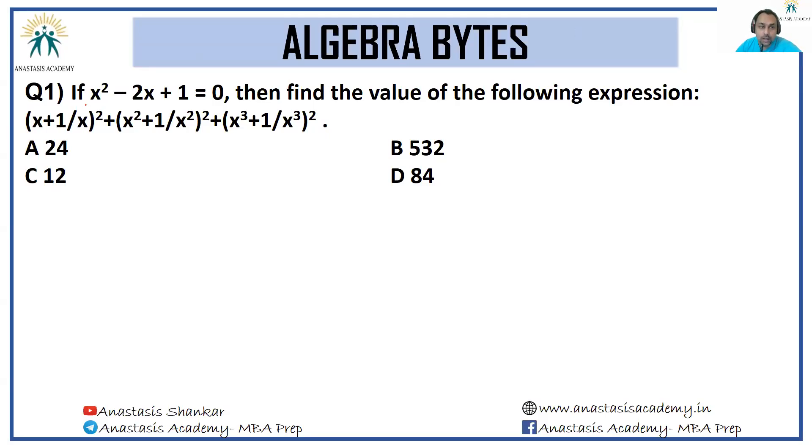Let's look at this question. If x² - 2x + 1 = 0, find the value of the following expression: (x + 1/x)² + (x² + 1/x²)² + (x³ + 1/x³)². I hope when you look at this question, this expression doesn't make you run away from it, because the game lies elsewhere. This is a very simple expression. This is nothing more than (x - 1)² = 0, which means x = 1.